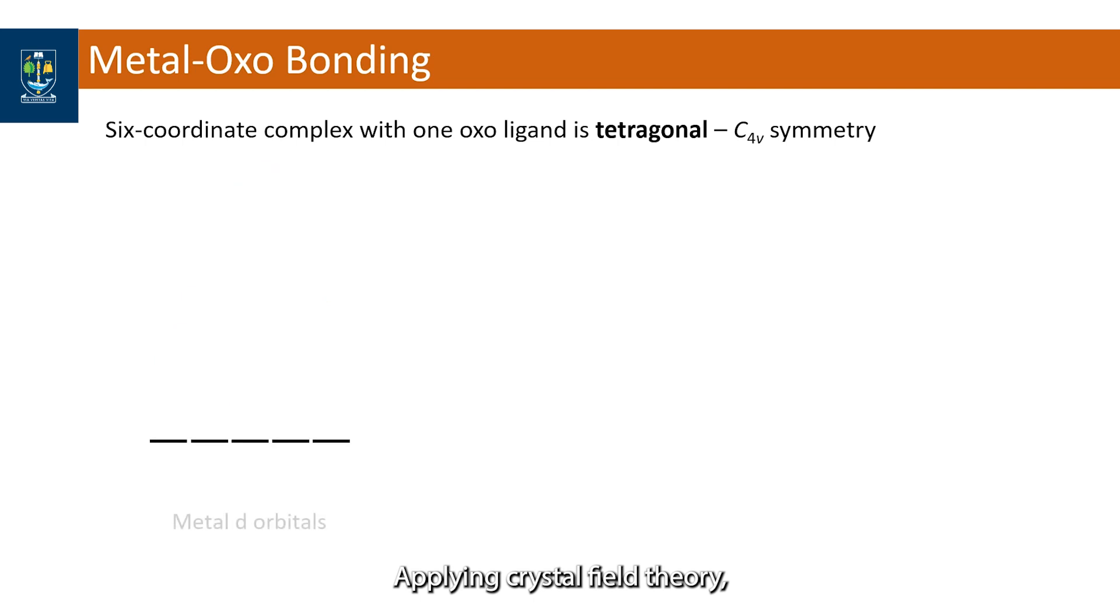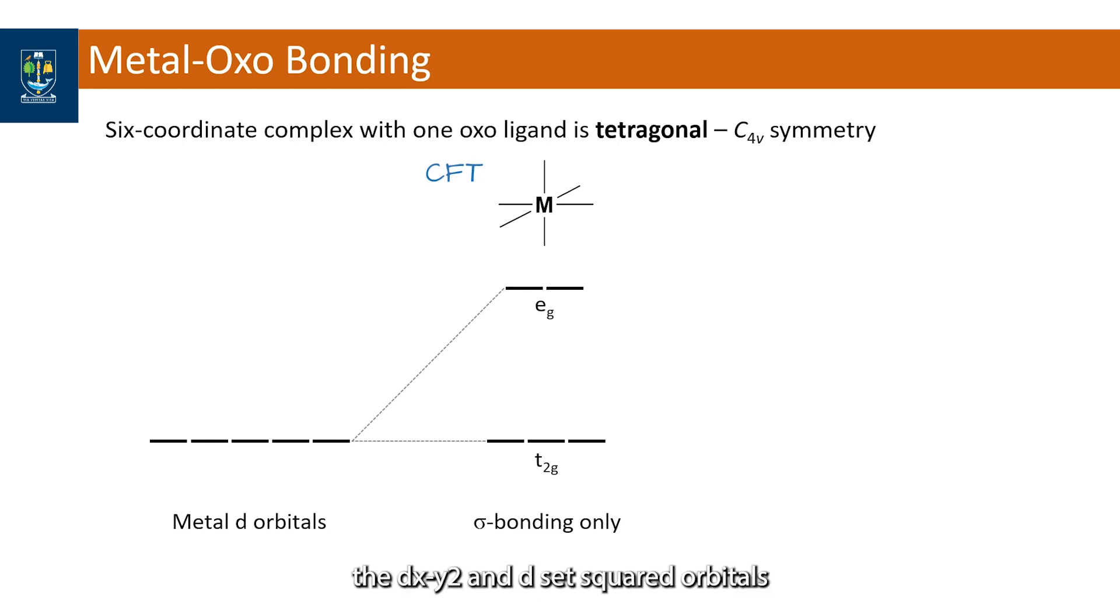Applying crystal field theory, the five degenerate d orbitals are split into doubly degenerate eg set, which are destabilized relative to the triply degenerate t2g set. The eg set comprise the dx squared minus y squared and dz squared orbitals, which point towards the ligands.